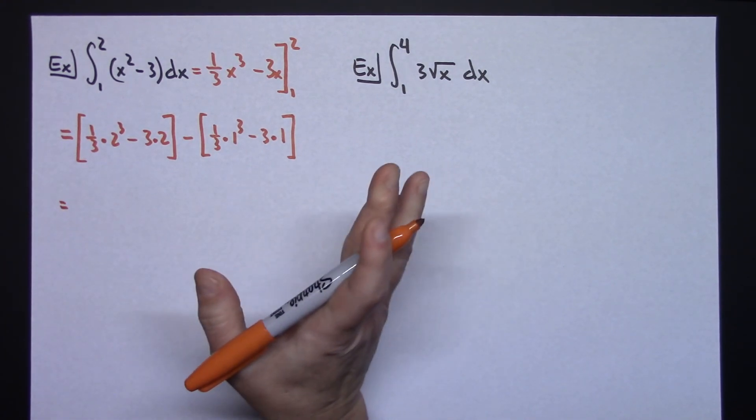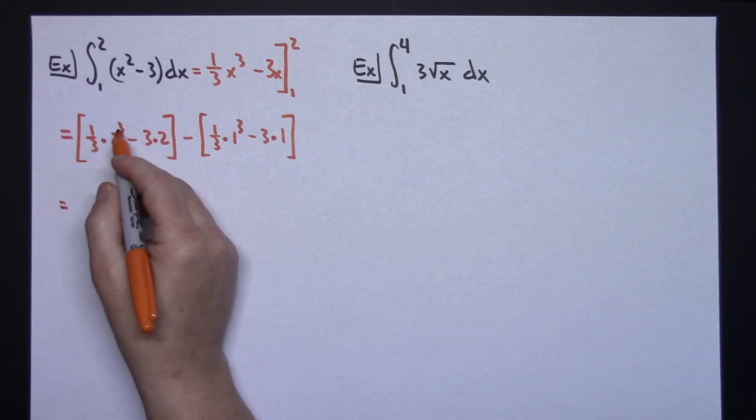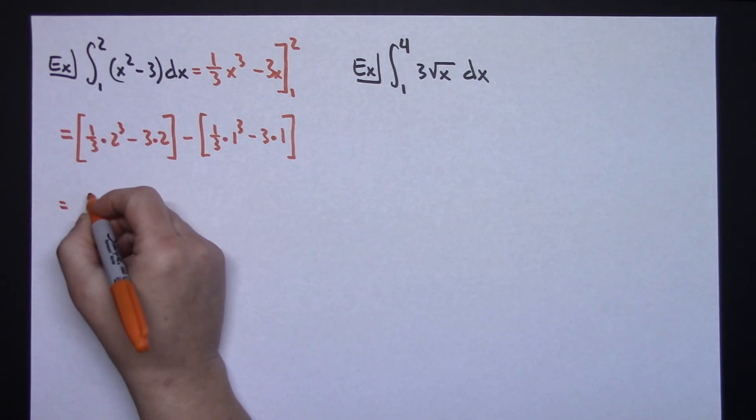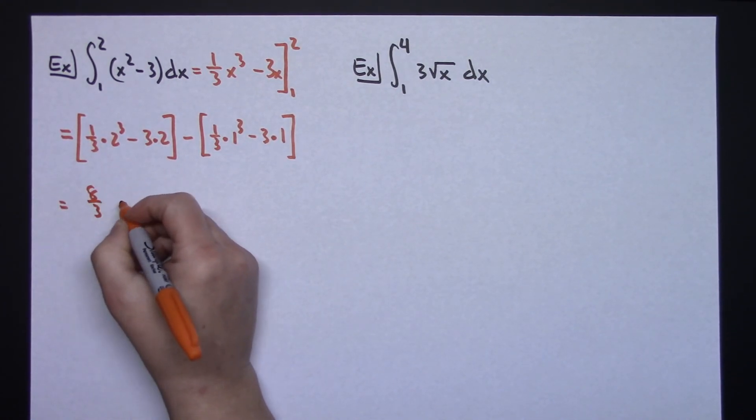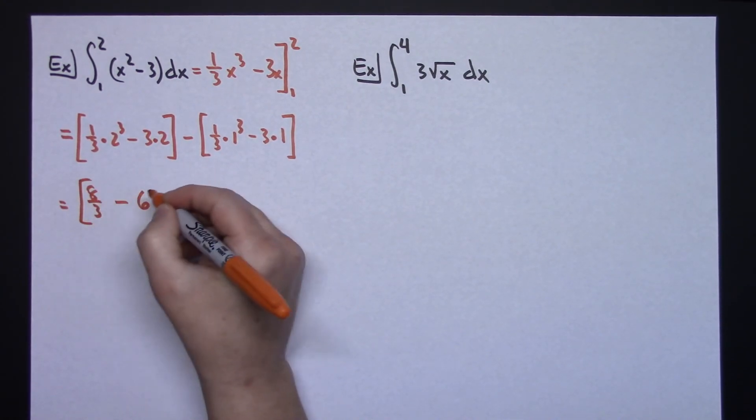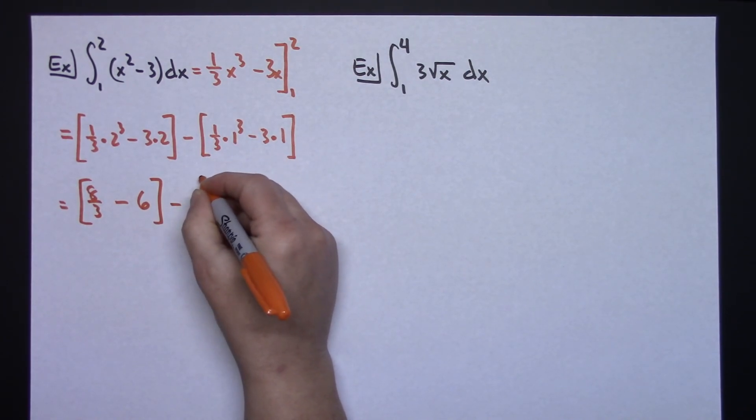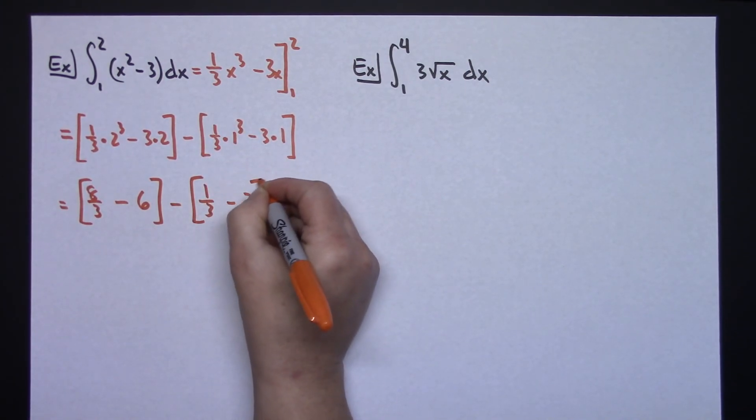Okay, so, but tedious arithmetic sometimes, and you definitely don't want to make a mistake here. Alright, if I do this, let's see, that would be an 8 thirds right there. I'm going to go through this arithmetic very, very quickly. This is going to be a 6. Alright, minus, this is just going to be a 1 third, and then minus a 3.